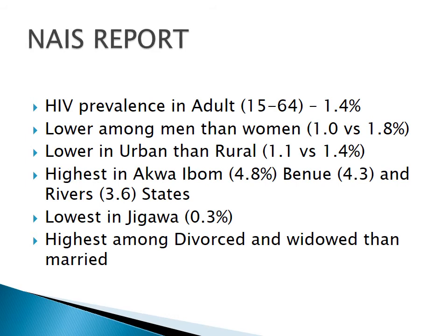It is a cause for concern that HIV rates are now higher in rural than urban areas. This may be attributed to better access to ART in urban communities, and infected individuals moving to rural areas. The highest state prevalence was found in Akwa Ibom at 4.8%, followed by Benue at 4.3% and Rivers State at 3.6%. The lowest rate was in Jigawa at 0.3%. The survey also found rates were higher among the divorced and widowed than among married individuals.